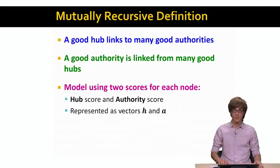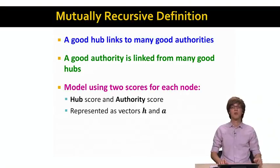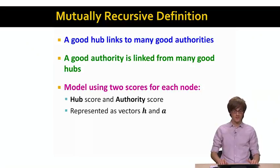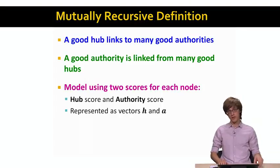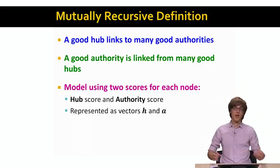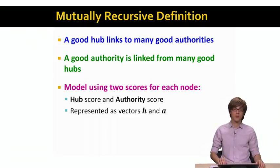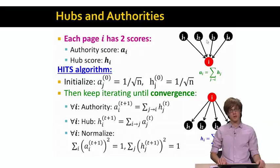What we have now is a mutually recursive definition: a good hub links to many good authorities, and a good authority is linked from many good hubs. We model this using two scores per node: a hub score vector H and an authority score vector A, similar to how we used a single vector in PageRank.